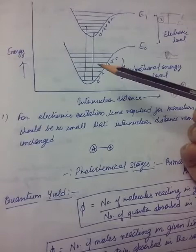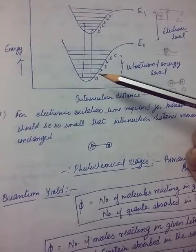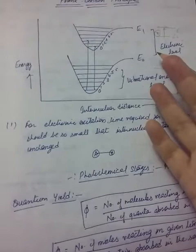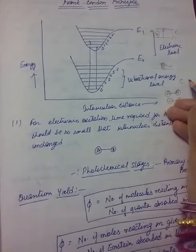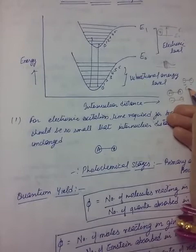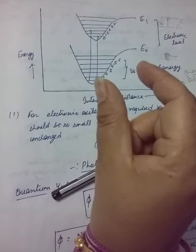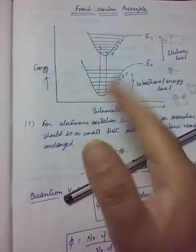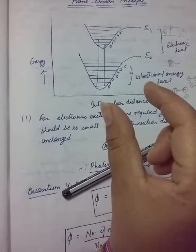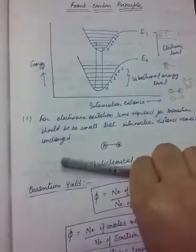The Franck-Condon Principle states that the electronic transition is so fast that the internuclear distance remains unchanged during the transition. The process is so fast that while molecules vibrate — meaning the internuclear distance normally changes during vibration — the electronic transition occurs before any nuclear motion takes place. So the internuclear distance is effectively fixed during an electronic transition. This is the Franck-Condon Principle.